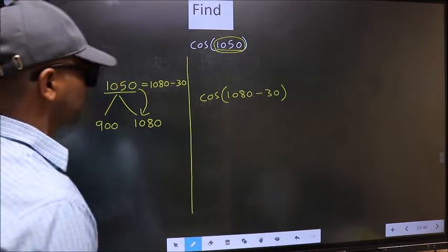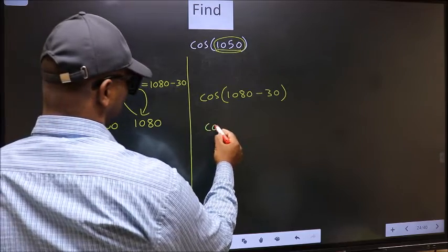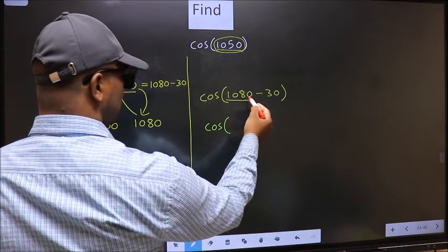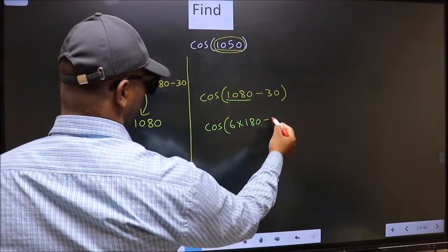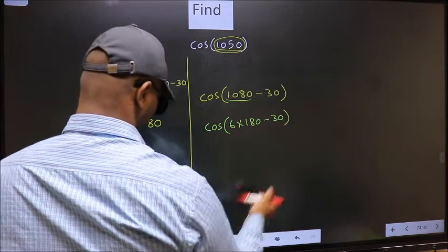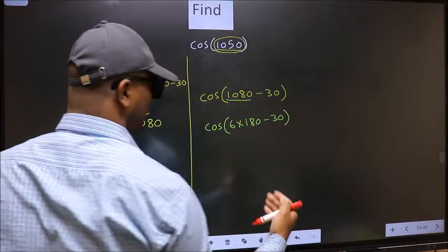Next, cos, in place of this, now we should write 6 × 180° minus 30°.